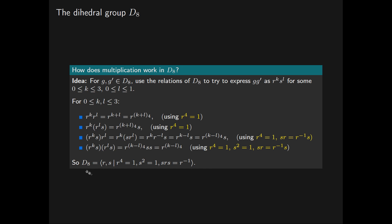So we can write that D8 has the group presentation generated by r and s, subject to the relations r^4 = 1, s^2 = 1, and srs = r-inverse. Note that in D8, the relation srs = r-inverse holds if and only if sr = r-inverse·s, since we just multiply both sides by s on the right. This is easily generalised for D2N. In the next video, we will look at internal semi-direct products of groups of invertible upper triangular matrices.